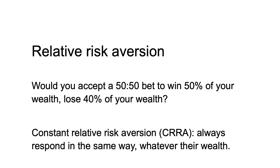Relative risk aversion is a measure of how an individual's risk aversion scales with their wealth. A person with constant relative risk aversion, CRRA, would respond to a bet risking a certain proportion of their wealth in the same way, whatever their wealth. This means that as their wealth increases, the absolute amount they're willing to risk increases, but it remains a constant proportion of their total wealth. For example, someone with constant relative risk aversion would always respond in the same way to a 50-50 bet to win 50% of their wealth or lose 40% of their wealth, regardless of whether that loss involves a possible $400 out of $1,000 or $400,000 out of $1 million. Constant absolute risk aversion utility functions are often used in theoretical models due to their mathematical simplicity. However, constant relative risk aversion utility functions are generally considered more realistic for modelling human behaviour, as people tend to adjust their risk taking based on their wealth.